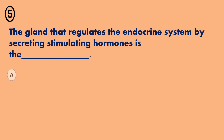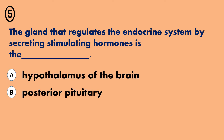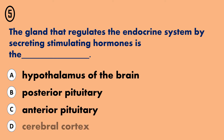A - Hypothalamus of the brain. B - Posterior pituitary. C - Anterior pituitary. D - Cerebral cortex.